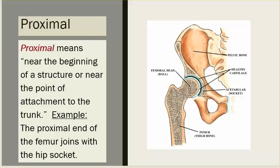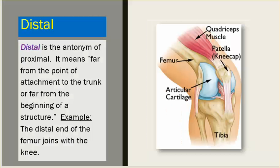Proximal means near the beginning of a structure or near the point of attachment to the trunk. Example: the proximal end of the femur joins with the hip socket. Distal is the antonym of proximal — it means far from the point of attachment to the trunk or far from the beginning of a structure. Example: the distal end of the femur joins with the knee.